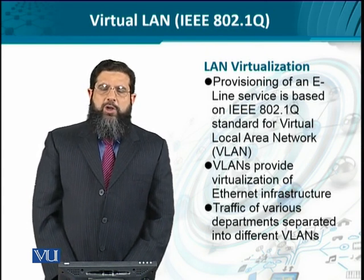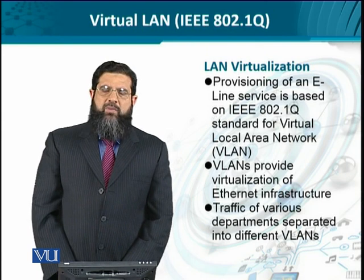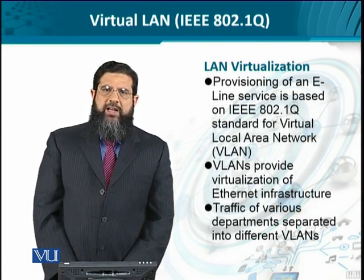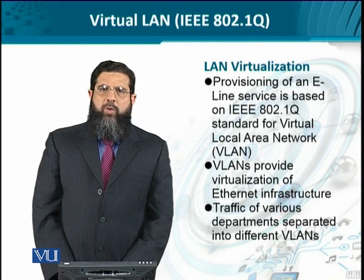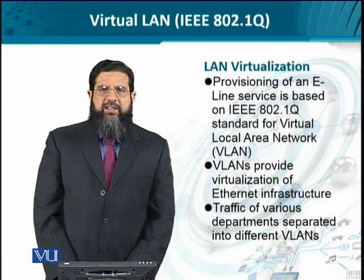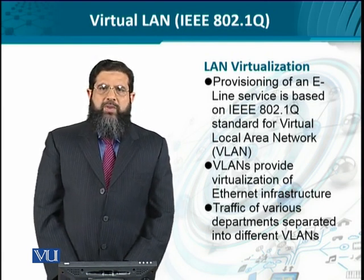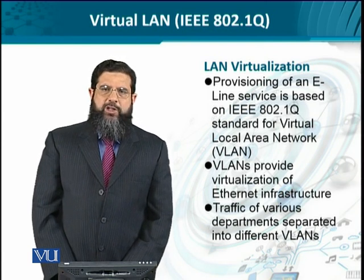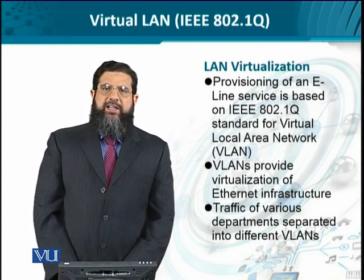As we all know, a local area network is characterized by the presence of a switching device like a switch, and having its own collision domain and broadcast domain. This means the IP addressing scheme of one LAN is different from that of another LAN if the two LANs are connected to the same router. So if a router has to provide two LANs, it needs two Ethernet interfaces, each connected to a switch with computers attached — this is how a physical Ethernet network topology looks.